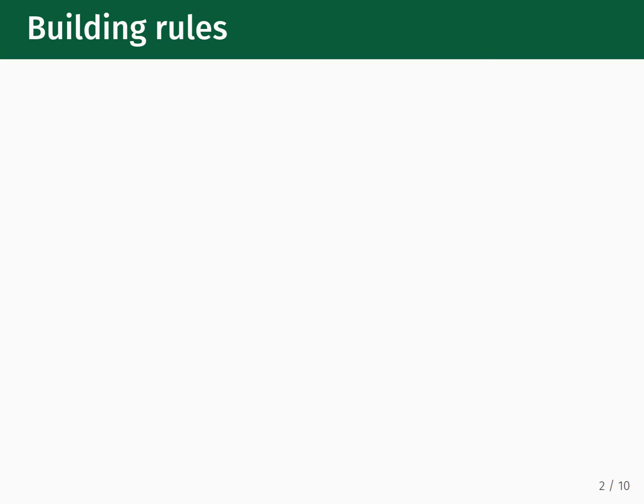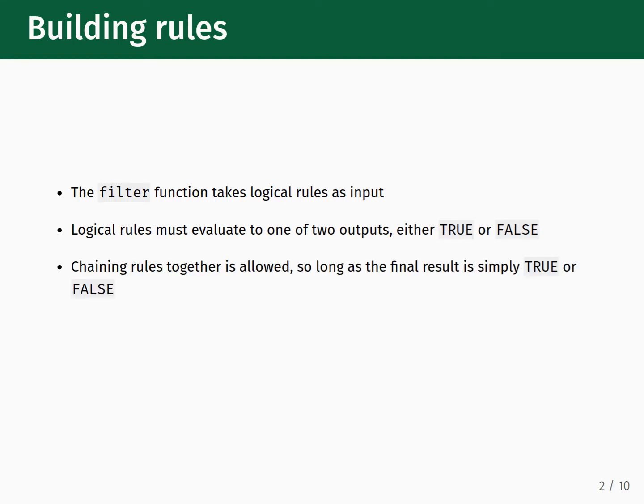The next function we will be discussing from the dplyr package is filter, which allows you to pass inputs that define logical rules for querying a dataset. These logical rules are statements that evaluate to one of two outputs, either true or false. You can also chain these rules together, so long as they ultimately result in a single true or false as output. Working with true and false values in this way is a form of Boolean logic.